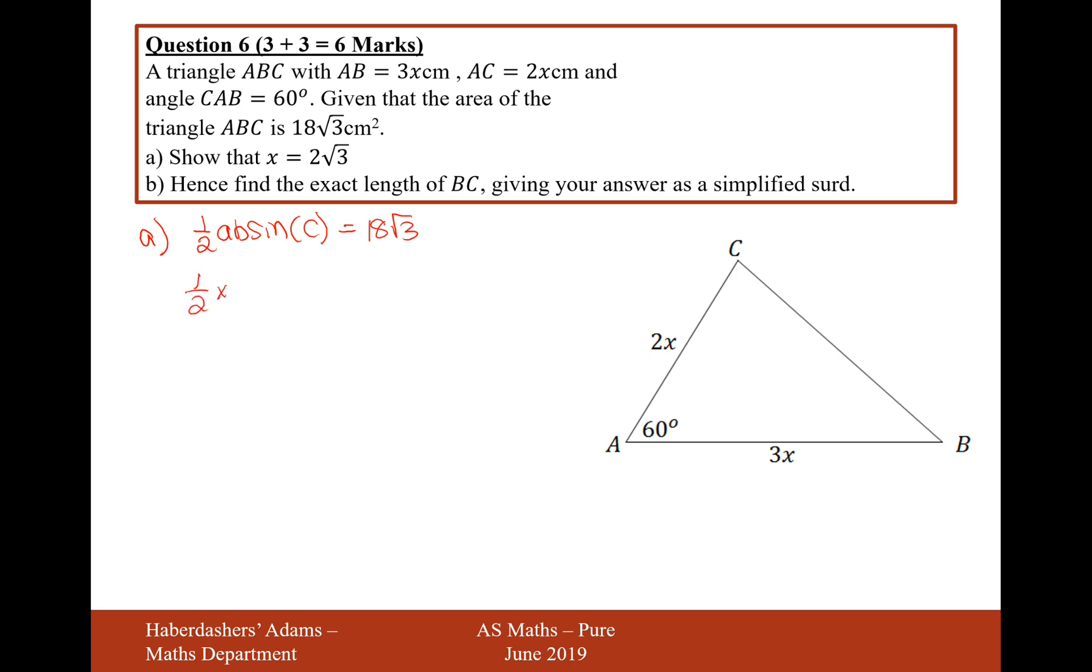It's going to be a half times A, we'll call it 3x. B, we'll call it 2x. And then it'll be sine 60 equals 18 root 3.